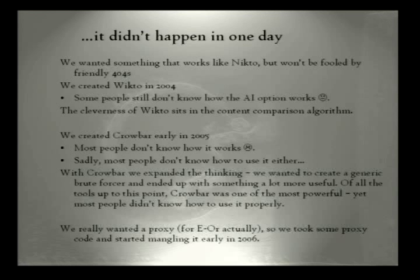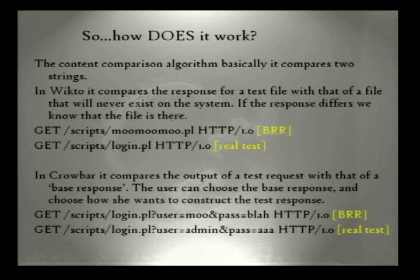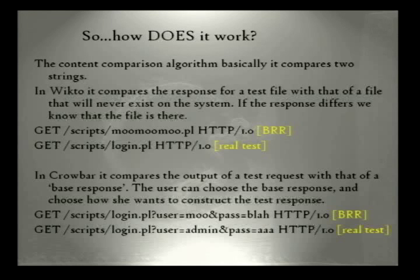So how does it work? In Wecto, if we want to test for a file — let's say login.pl in the script directory — we would first test for something in that directory that we know does not exist, like 'moo.' That's the base response. In Crowbar, we do the same thing. If we want to test for a username and password, we test for something that we know would never be correct, like 'moo' and 'blah.' Then we use the actual test we want to perform and compare the content between those two requests. If the content is the same, the file doesn't exist or the login was unsuccessful. But if they differ, we know we've got a different page, which is interesting.